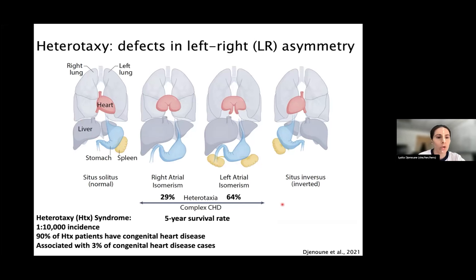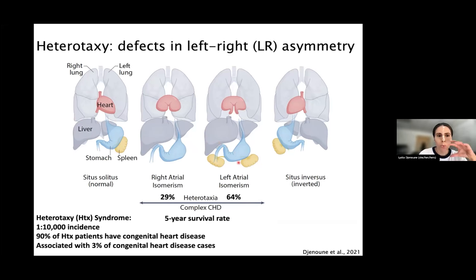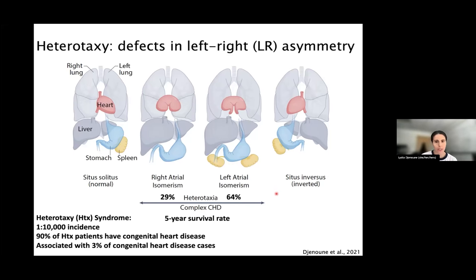Defects of left-right asymmetry typically fall in the spectrum of a syndrome called heterotaxy, which is defined by the abnormal arrangement of internal thoracic and abdominal organs across the left-right axis of the body. When you have a complete reversal of organ position and structure, you're completely fine — that's called situs inversus. But whenever you end up with a slight abnormal arrangement, you fall under the spectrum of heterotaxy.